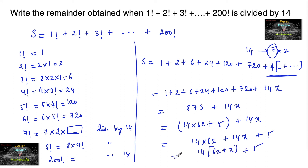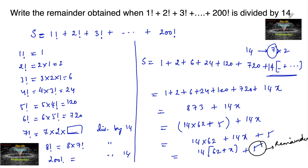By the division algorithm — dividend equals divisor times quotient plus remainder — we can see that the remainder is 5. So when 1 factorial plus 2 factorial plus ... plus 200 factorial is divided by 14, the remainder is 5.